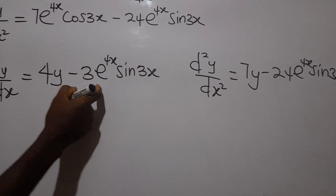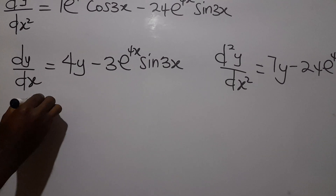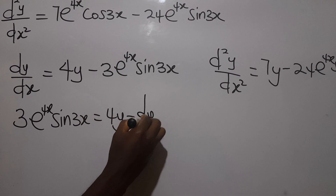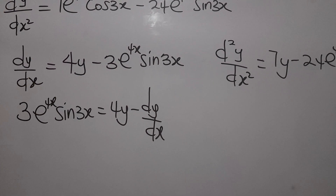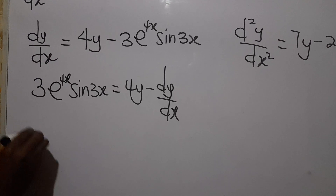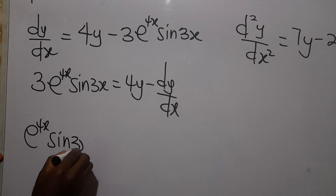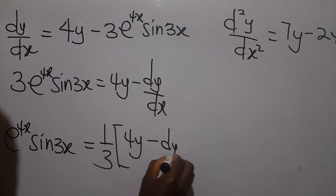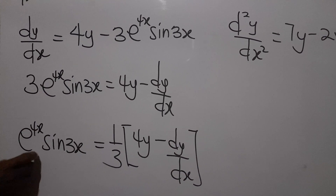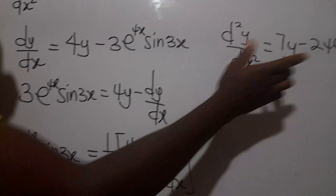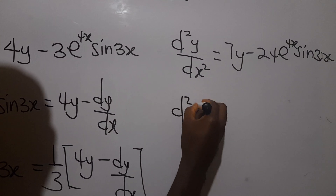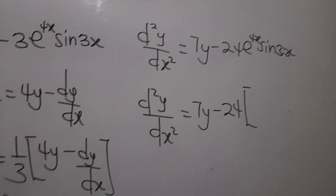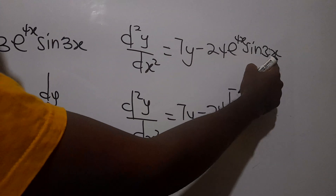Now from here, we can say 3e^(4x)sin(3x) is equal to 4y minus dy/dx — that is, bringing terms across and sending dy/dx to the other side. So making e^(4x)sin(3x) the subject by dividing both sides by 3, we get e^(4x)sin(3x) equals one-third times (4y minus dy/dx). Having found this, we substitute it back.